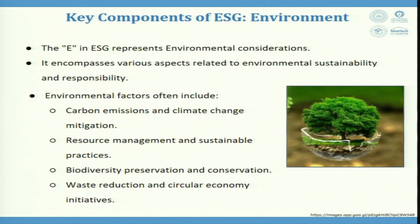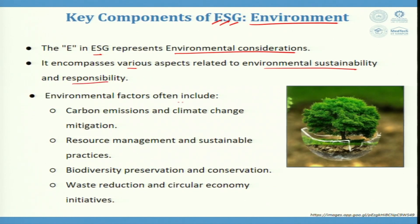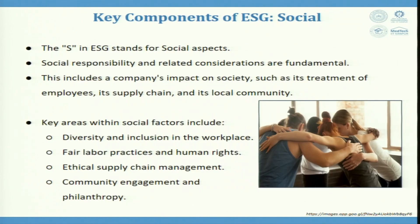Let us talk about the three letters E, S, and G in detail. First is E — Environment. The E in ESG represents environmental considerations, encompassing various aspects related to environmental sustainability and responsibility. Environmental factors include carbon emissions and climate change mitigation, resource management and sustainable practices, biodiversity preservation and conservation, and waste reduction and circular economy initiatives. The SDG goals — Sustainable Development Goals — are also aligned with this, which will be discussed later in the week.